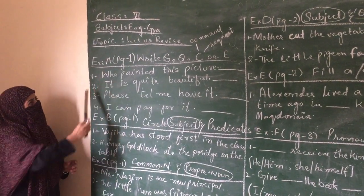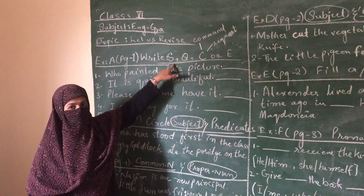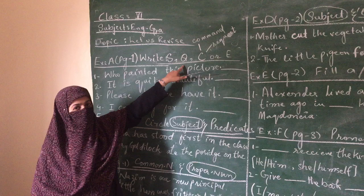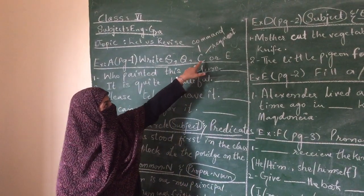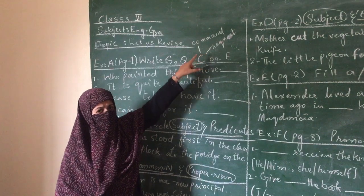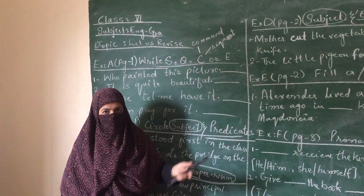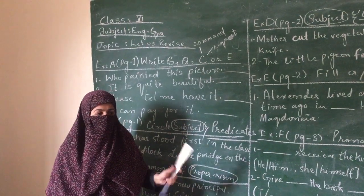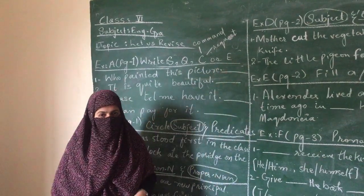In first exercise on page number 1, write S - S means sentence, Q - Q means questions, C - C represents a request if you use please and command, command means you have to do it, or E - E means exclamatory sentences.